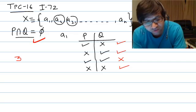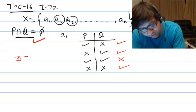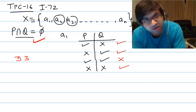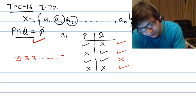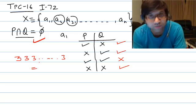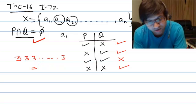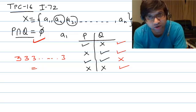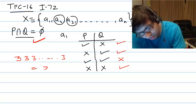Similarly, for a2 we have three options, for a3 we have three options, and this goes on to the last element an. So the number of ways to form subsets P and Q such that their intersection is empty equals 3 to the power n.